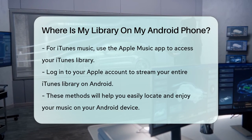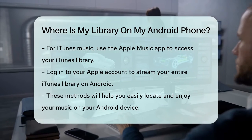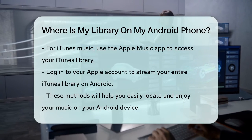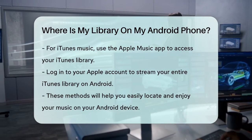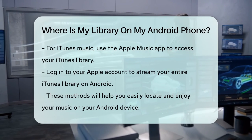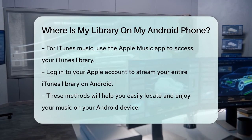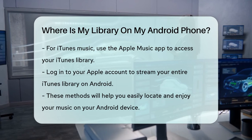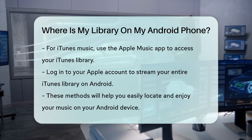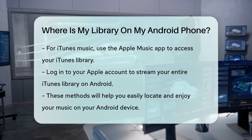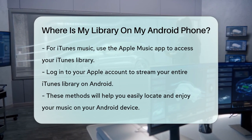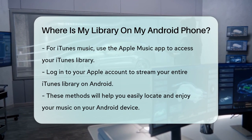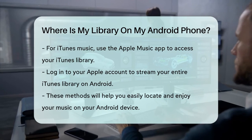In summary, to find your music library on an Android phone, check the Music folder in Internal Storage, use the Music Player app, or look in the Downloads folder for downloaded music files. This should help you locate and enjoy your music effortlessly.